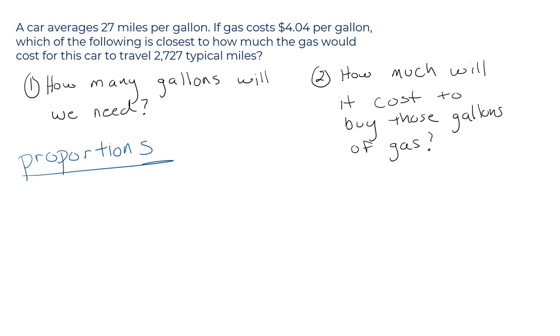What's a proportion in math? Well, a proportion means that two ratios are equal to each other. Now, what are the ratios here? For every gallon of gas, you can travel 27 miles.